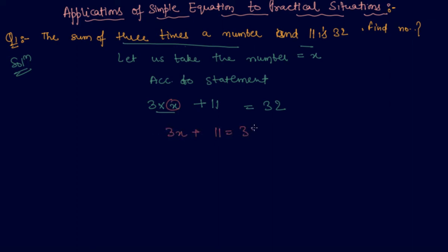Now I can easily solve the equation by the method which I told you in my previous lecture. You can solve the question by any of the methods which I told you. So what I will do is I will take the 11 on right hand side, so the sign will change. So 3x will become 32 minus 11.